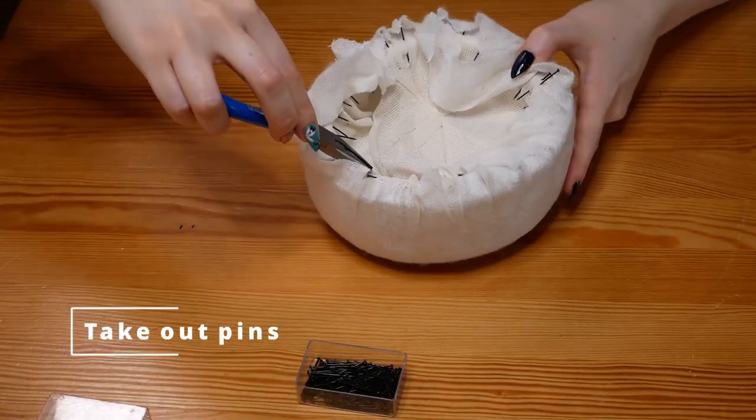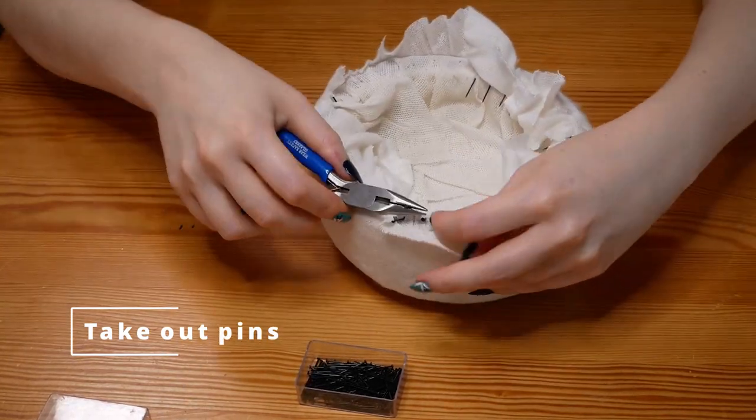Using pliers, I'm going to start by taking out all the pins that are holding the buckram over the block.